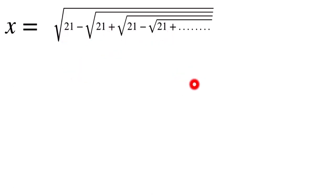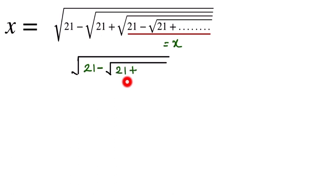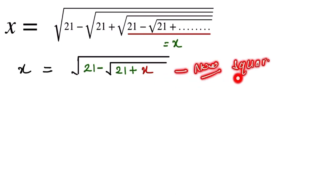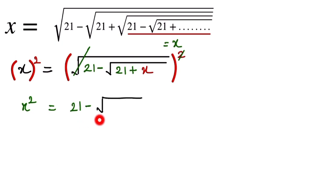So here, just look at this — this term 21 minus the square root of 21 is repeated, and both parts are the same. So we let this entire expression equal to x. So here we have the square root of 21 minus the square root of 21 plus x, and this whole expression equals x. Now we square both sides. When we square both sides, x squared equals 21 minus the square root of 21 plus x, since the square root is cancelled out.